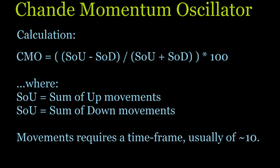The calculation of the Chande Momentum Oscillator is as follows: SOU equals the sum of up movements, and SOD is the sum of down movements. The CMO equals the sum of all up movements minus the sum of all down movements, divided by the sum of all up movements plus the sum of all down movements, then multiply that fraction by 100.